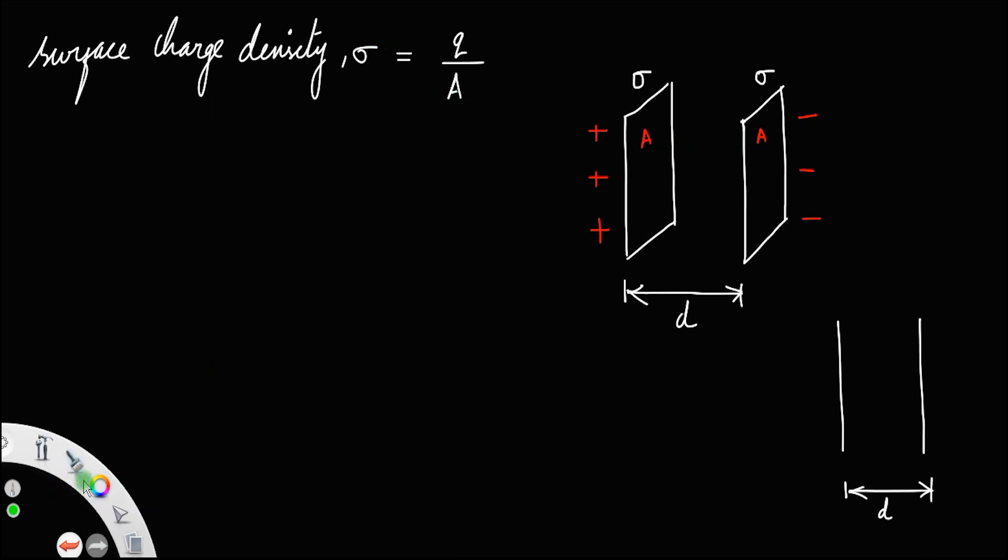For a positive plate, the electric field will be away from the plate and its value will be E equal to sigma divided by 2 epsilon 0, where epsilon 0 is the permittivity of free space. Also, for the negative plate, the electric field is towards the plate and its value is also E equal to sigma divided by 2 epsilon 0.